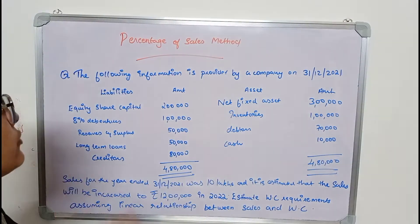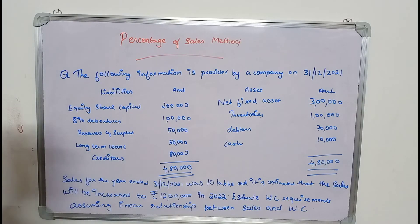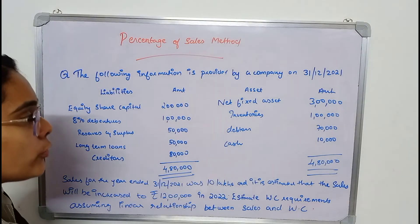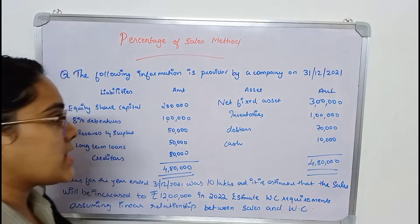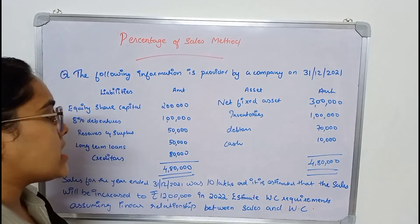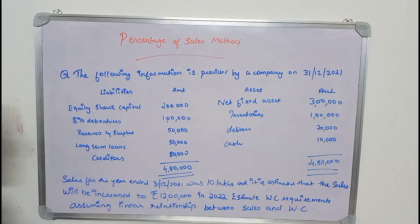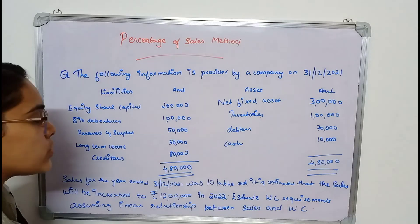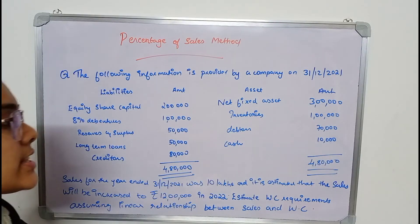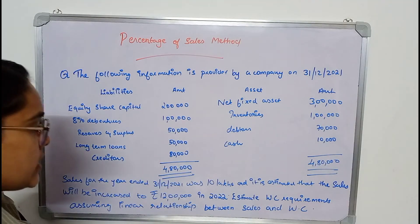This is the question. The following information is provided by a company on 31-12-2021. Liabilities include equity share capital, 8% debentures, reserves and surplus, long-term loans, creditors — total 4,80,000. On the asset side: net fixed assets 3,00,000; inventories 1,00,000; debtors 70,000; cash 10,000 — total also 4,80,000. Sales for the year 31-12-2021 was 10,00,000, and it is estimated that sales will increase to Rs. 12,00,000 in 2022.